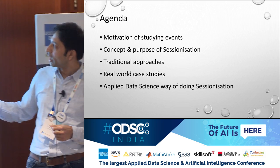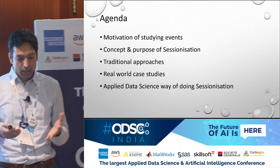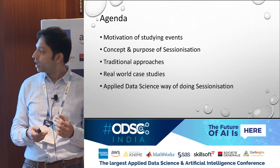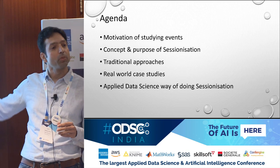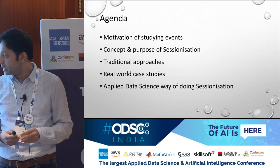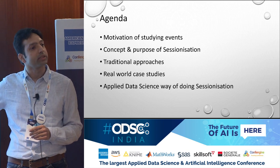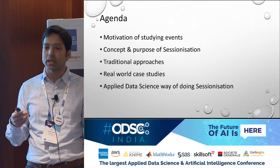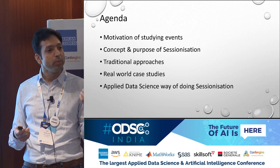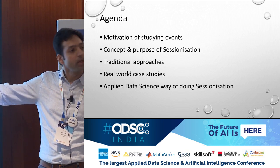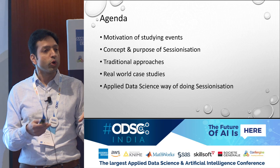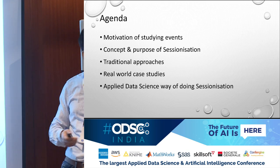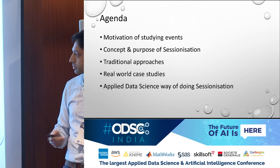Things I'm going to talk about: first, events are a very normal thing happening in the real world. I'll talk about what events are, then why we need stationarization from a machine learning perspective, then the traditional approach, some real-world use cases, and finally the applied data science way — a mix of knowing the maths and knowing what to apply.